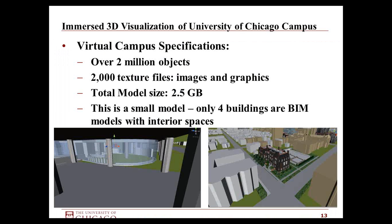For the virtual campus specifications, the model as it sits right now is a little over 2 million objects. There are 2,000 texture files — graphics and images from the importing process coming over from BIM models in FBX using Autodesk materials library standards. The graphic files are basically JPEGs from SketchUp. The overall total model size is around 2.5 GB. We only have four buildings that are actually modeled both interior and exterior within the virtual campus.